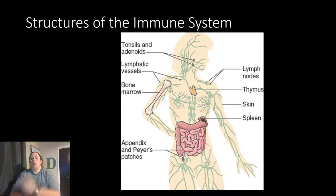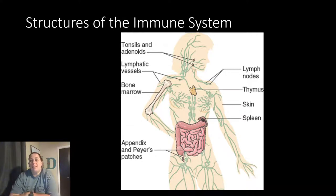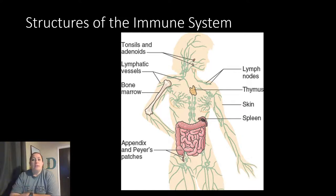You'll notice in certain locations like the neck, the armpit area, or the groin area there are concentrations of little nodes called lymph nodes, and they're there to filter, trap, and then destroy anything that does not belong — using white blood cells. We also have other specialized structures that are also there to trap, filter, and destroy: the tonsils and adenoids, Peyer's patches in the appendix, and the spleen also plays a role in the immune system, as well as the thymus gland and the bone marrow.